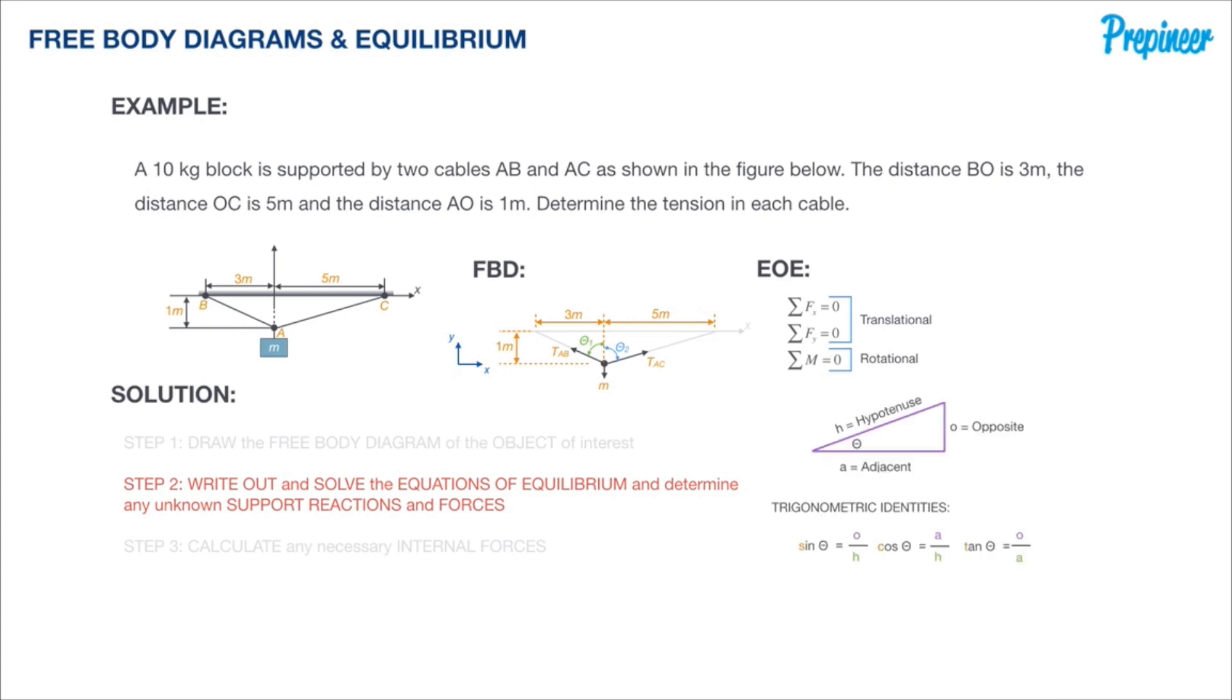To do that, we're going to refer back to our trigonometric identities and use the appropriate one to determine each of the angles. In both cases we have the opposite and adjacent side, so tangent will be the appropriate function to use.